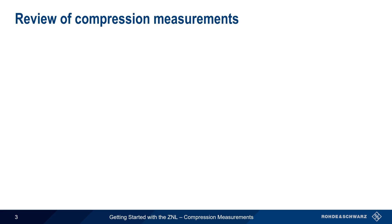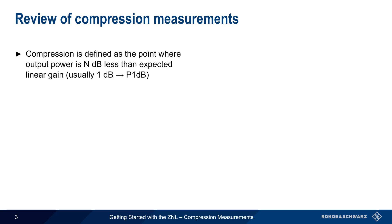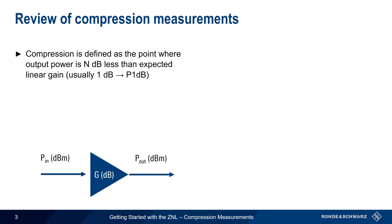Let's start with a brief review of compression measurements. Compression is defined as the point where the output power of a device, most often an amplifier, is N dB less than the expected output power, assuming a constant or linear gain. In most cases, N is 1, and compression is commonly quantified as the 1 dB compression point or P1dB.